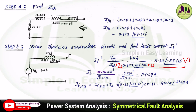You get a per unit fault current of 5.38∠−87.626°. To calculate the actual fault current, multiply by the base current. Base current = (MVA_B × 10³) / (√3 × kV), with the fault at section 2 so kV = 33. Base current = (5 × 10³) / (√3 × 33) = 87.47 A. Therefore, the actual fault current = 5.38 × 87.47 = 470.58∠−87.62° amperes.